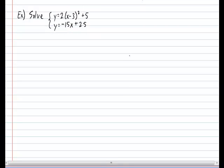Solve the system of y equals 2 times x minus 3 all squared plus 5 versus y equals minus 15x plus 25. Notice that this is semi-linear because the first rule is quadratic written in standard form and the second rule is a linear function.